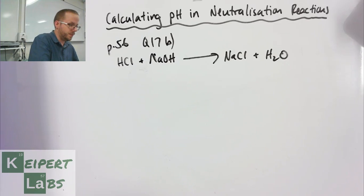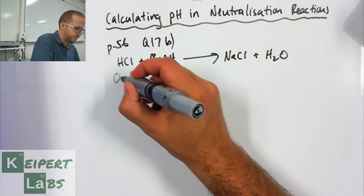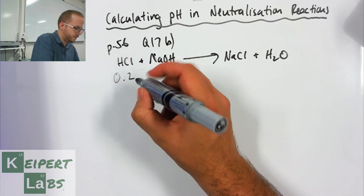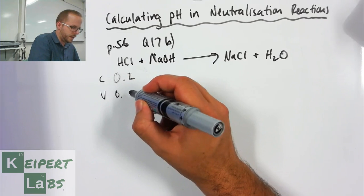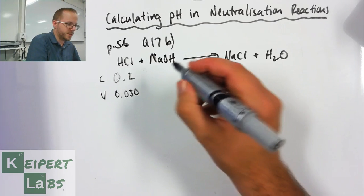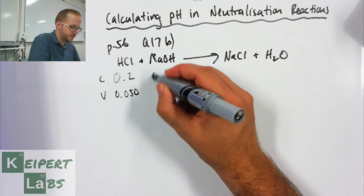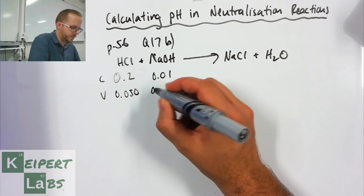For HCl we've got a concentration of 0.2 mol per litre and we're told we've got a volume of 0.05. For sodium hydroxide we've got a concentration of 0.01 mol per litre and we've got a volume of 0.02.